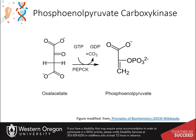The reaction mediated by phosphoenolpyruvate carboxykinase is the conversion of oxaloacetate to phosphoenolpyruvate, using GTP as the phosphate donor. The enzyme also releases carbon dioxide.